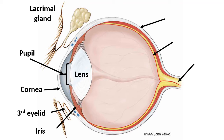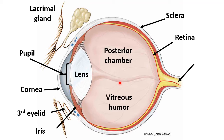The outermost layer of the globe within the orbit is what we call the sclera — the white portion of our eye. Deep within it is number eight, the retina. The eyeball has two chambers: the anterior chamber, which is bounded by the lens and the cornea, and number nine, the posterior chamber or vitreous chamber, which contains vitreous humor.